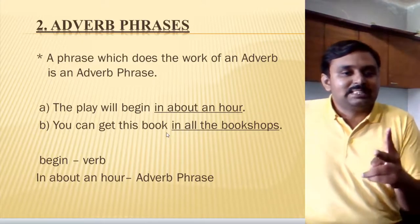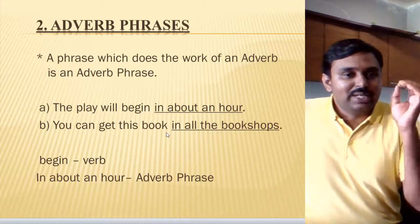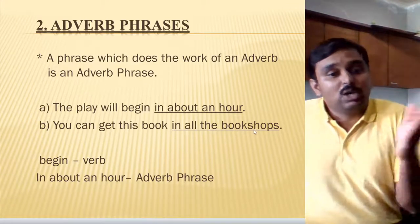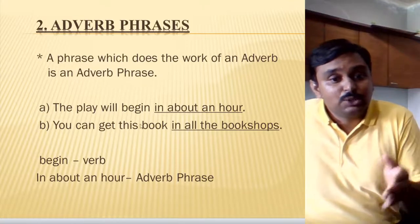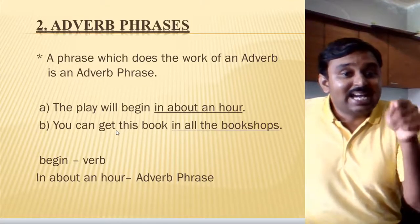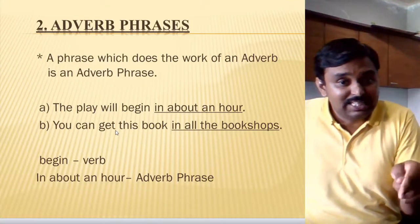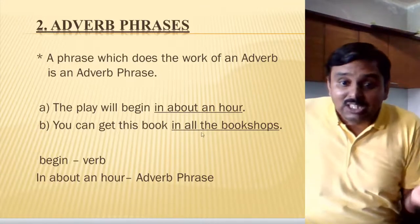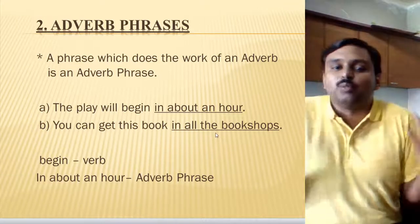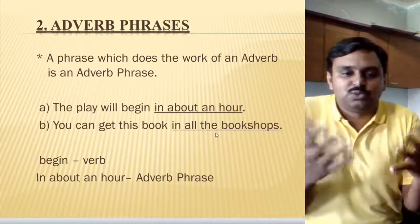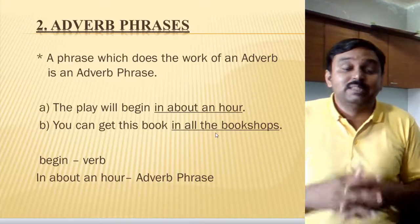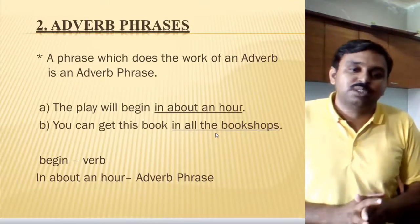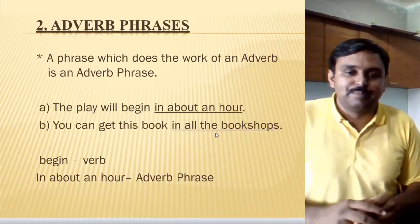For the second example: 'You can get this book in all the book shops.' What will happen in all the book shops? You can get the book. Getting is the action, but where will you get it? In all the book shops. So that phrase is describing more about the verb 'get,' and for that purpose it becomes an adverb phrase.